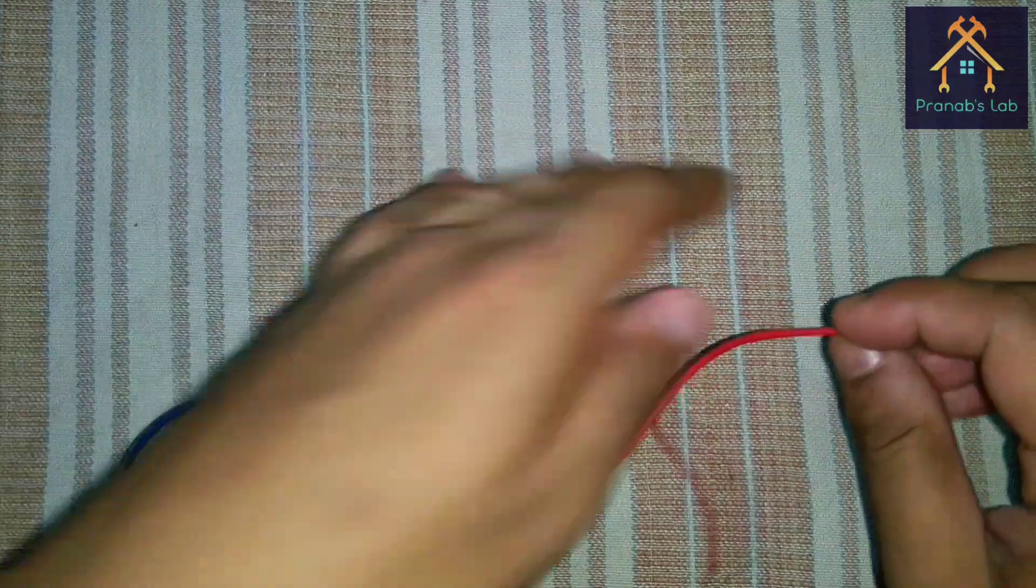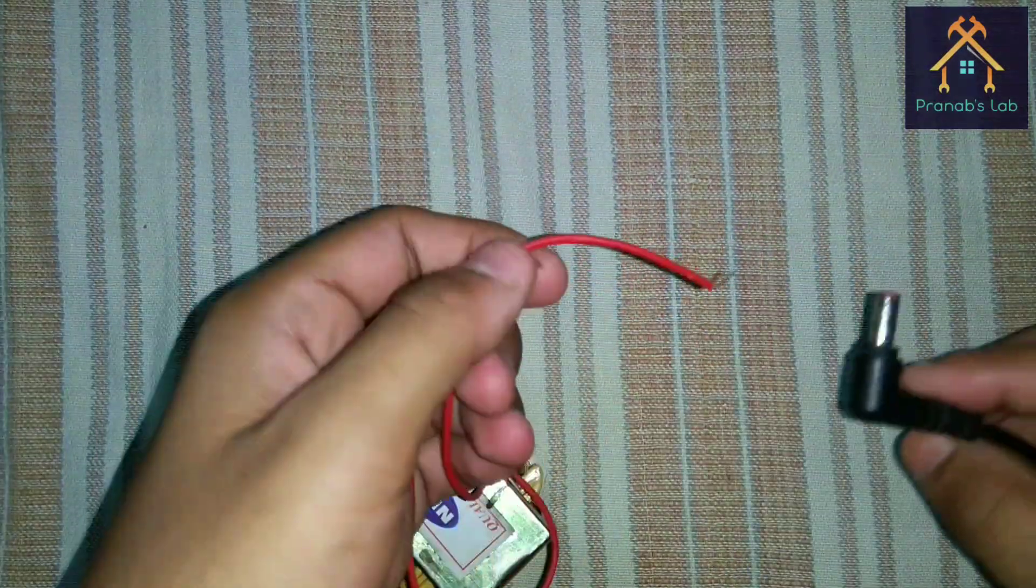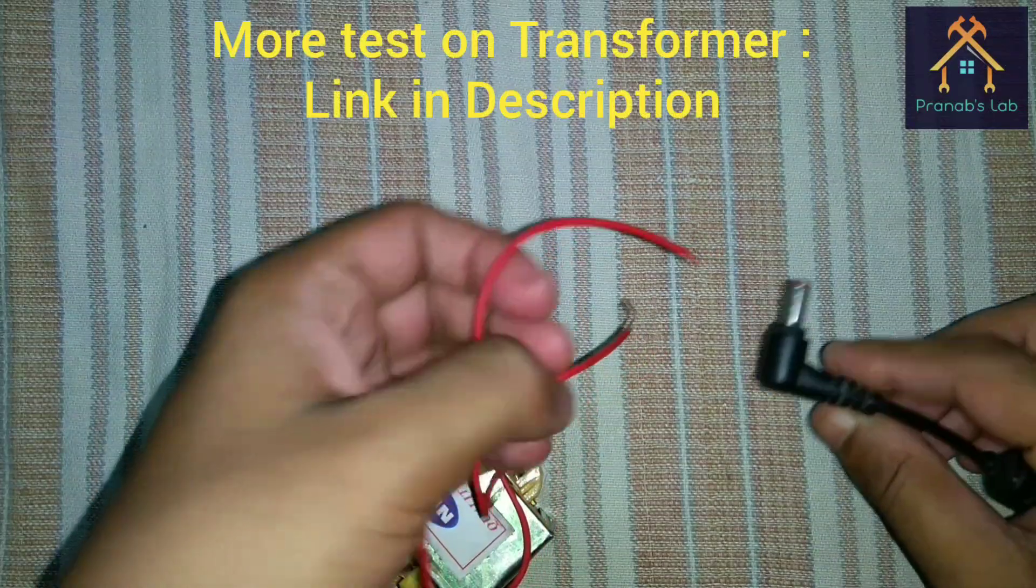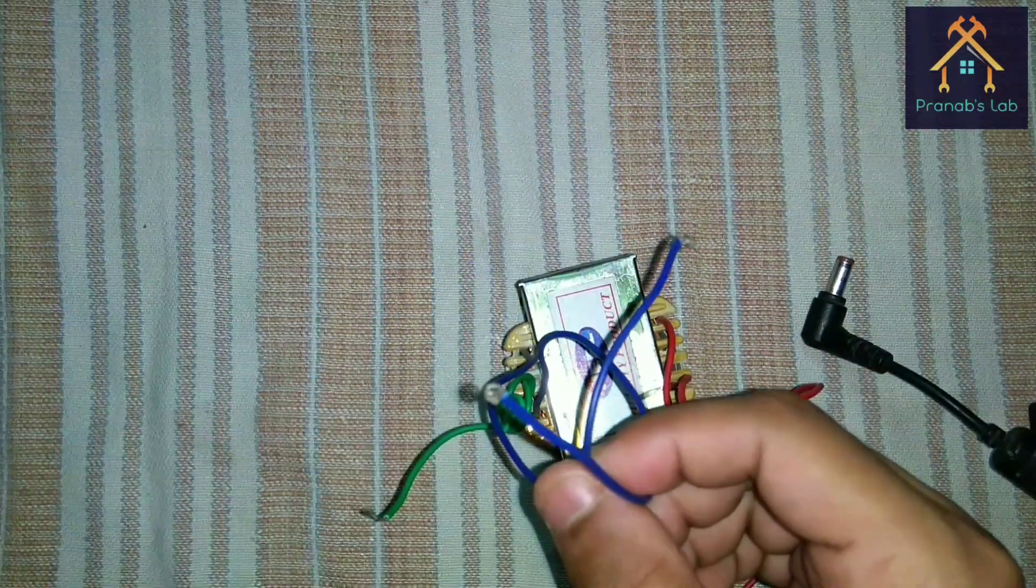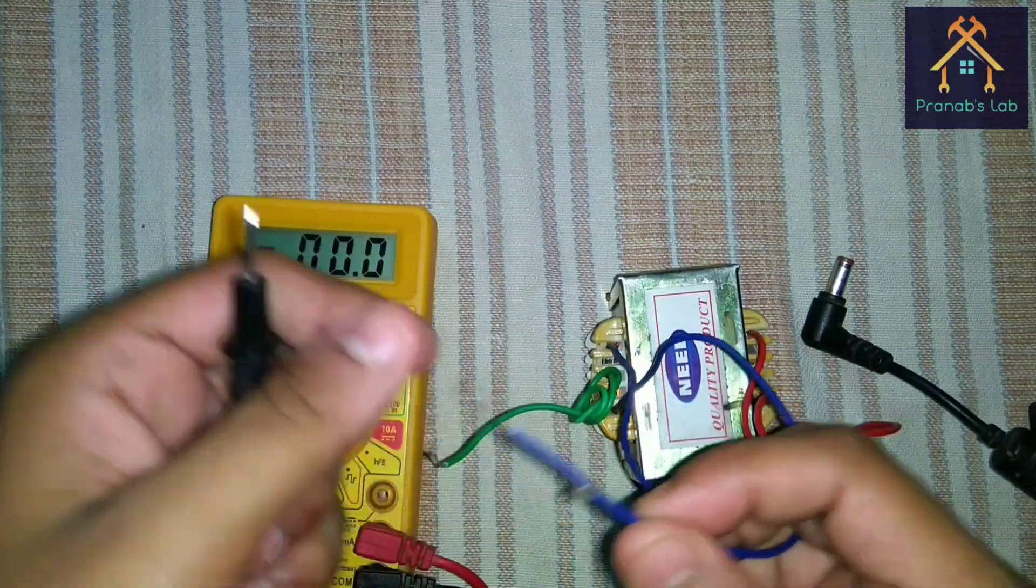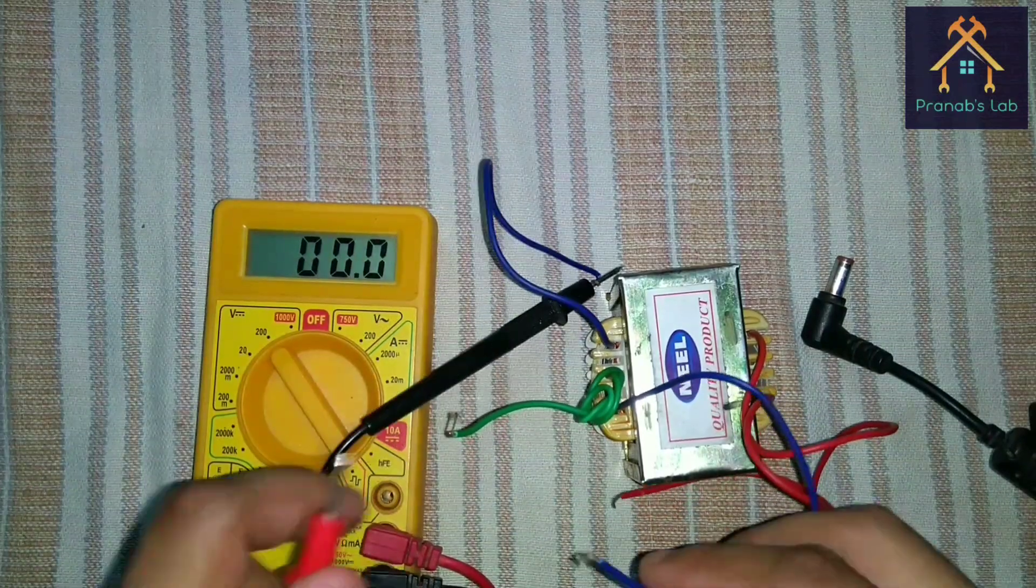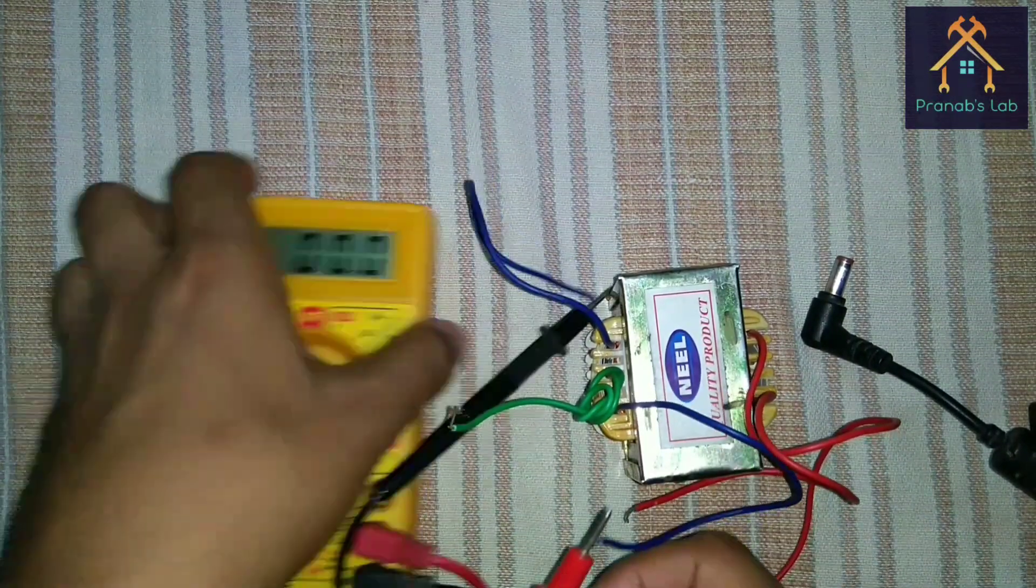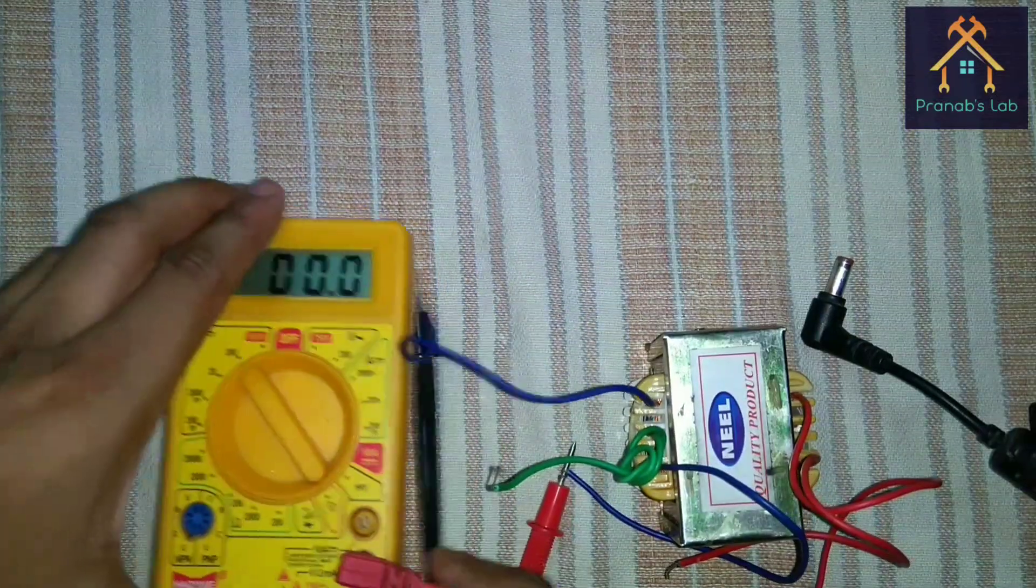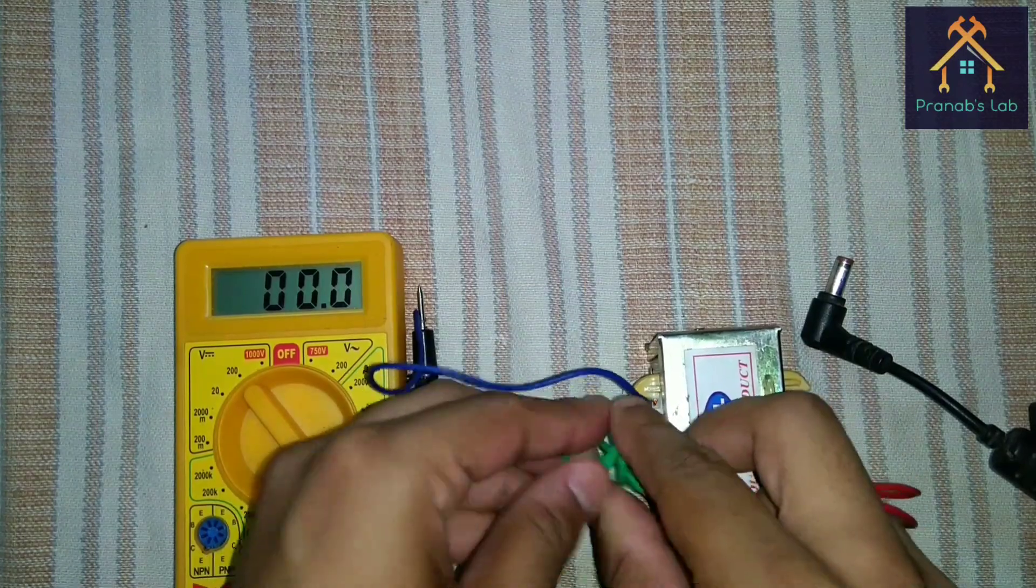These two are the input terminals of 230V, and we will supply 20V DC across this. And we will measure the output voltage across the two blue wires, that means the secondary winding of the transformer. The leads of the digital multimeter are connected with the output terminals, and the center tap terminal is ignored.